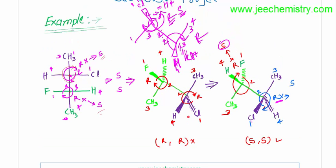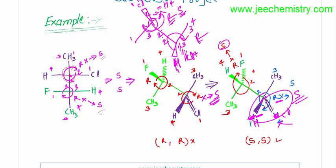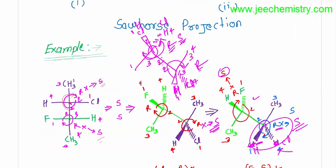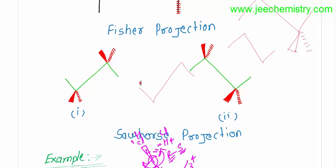This is fine — this is R, but the fourth priority group is in the wedge position, so the answer will be S. This is fine, this is S. We did not need to change this. Here the hydrogen is here and the chlorine is here. In this way we provide the numbering and we get S. Now we will learn Fischer to Sawhorse projection formula from the numbers.